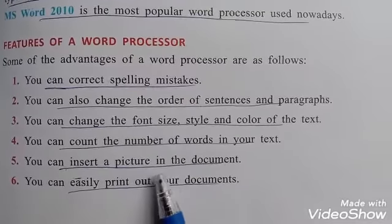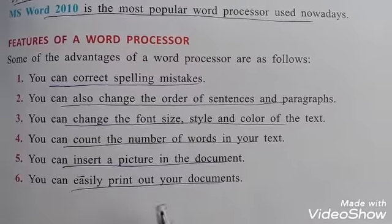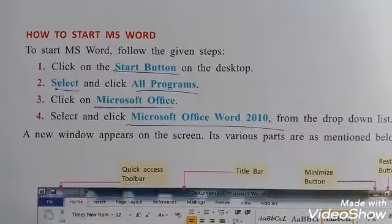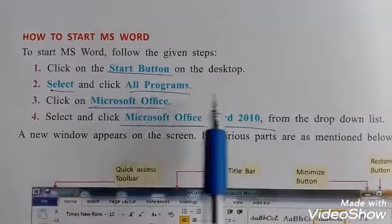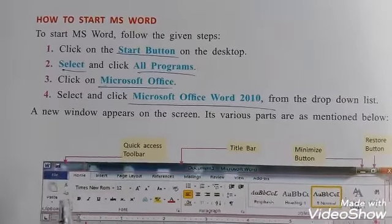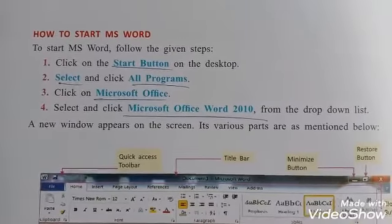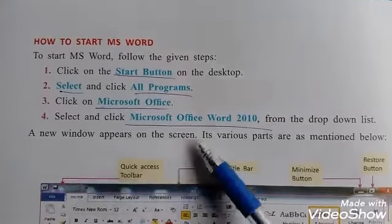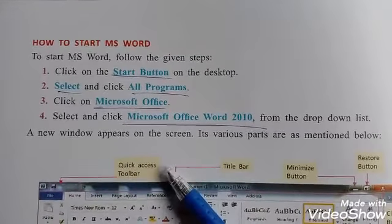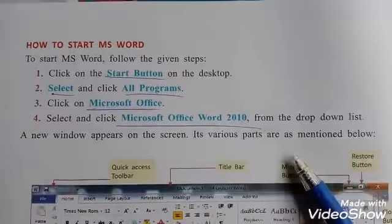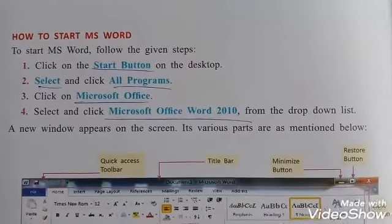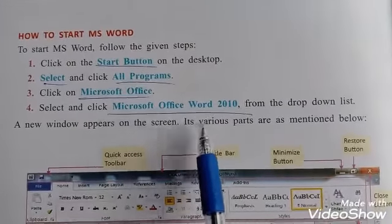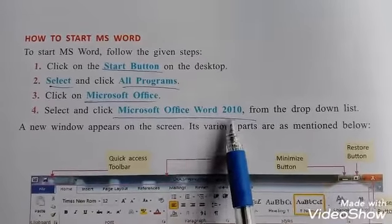To start MS Word, follow the given steps: Click Start button, then click All Programs. When you click All Programs, then click MS Office. MS Office contains different software like MS Excel, Access, Spreadsheet, etc. Select and click MS Word 2010.